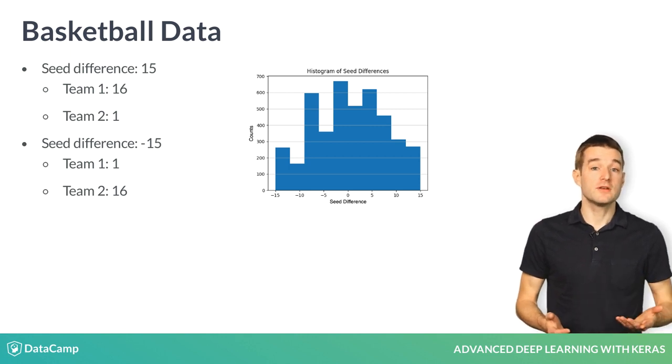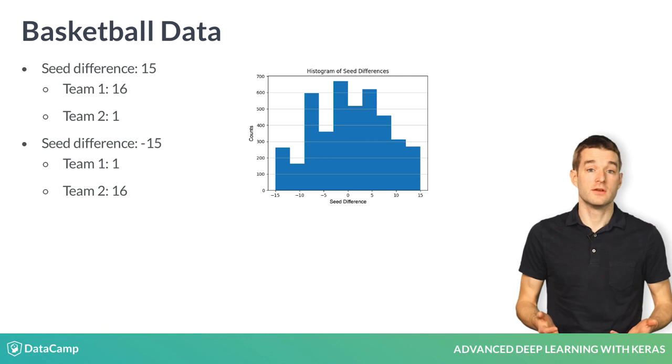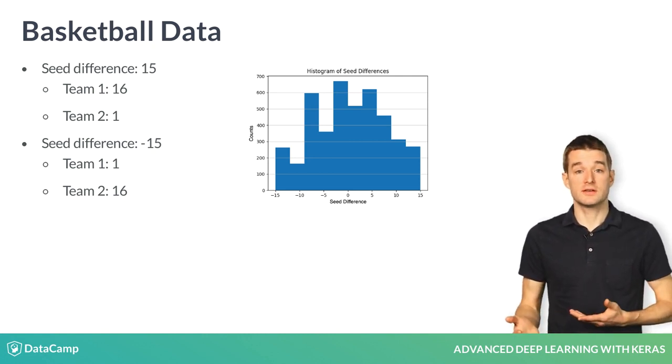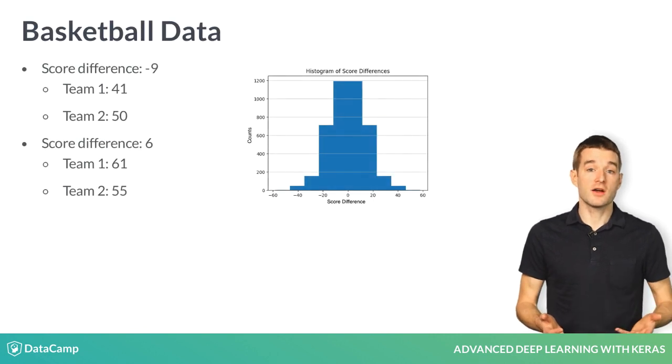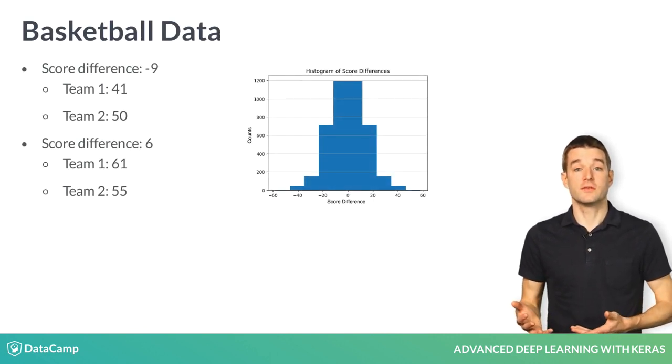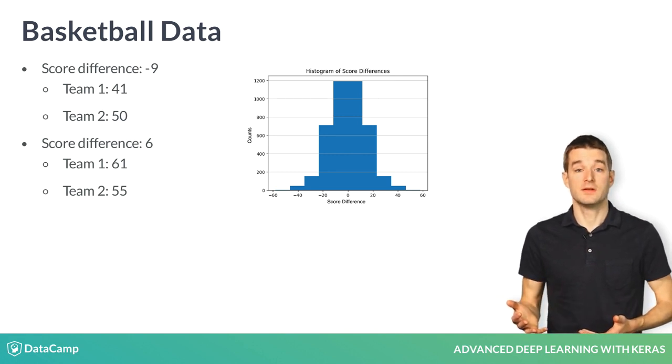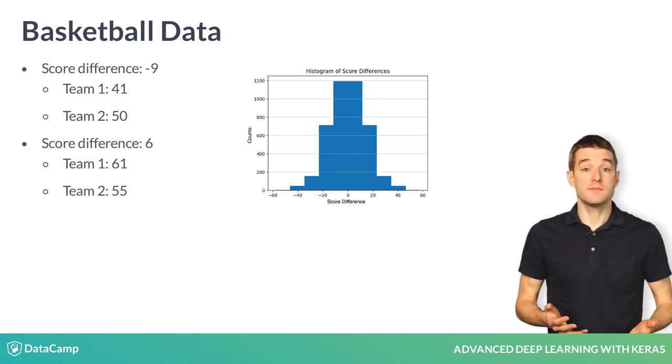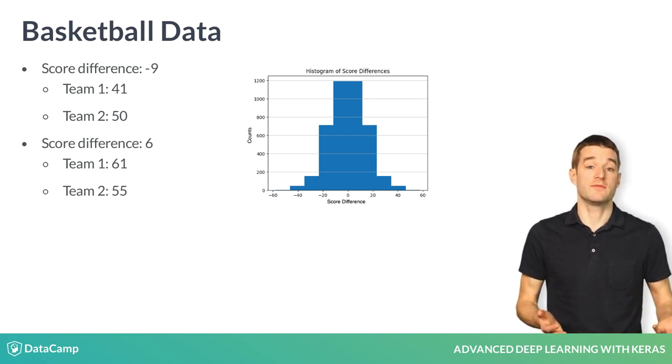So a positive seed difference is usually predictive of a negative score difference, and a negative seed difference is usually predictive of a positive score difference. Our target variable is the game score difference and ranges from about negative 50 to positive 50.